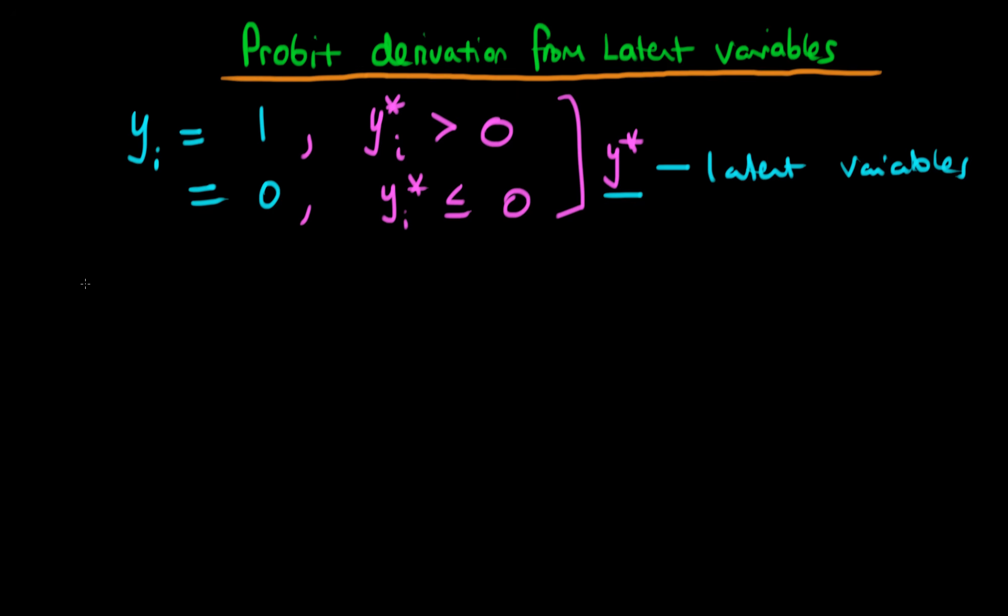And furthermore, what we suppose is that there is a linear model which determines these latent choice models. So we have that yi star is equal to beta times xi plus epsilon i. And if we suppose here that, as we have before, that epsilon i is normally distributed with a mean of 0 and a variance of sigma squared, then it's quite easy to prove that a probit model is actually going to result naturally as a result of this particular process in terms of the latent dependent variable which we don't observe.